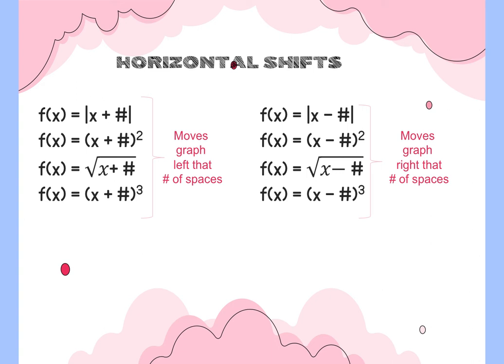If a number is inside the absolute value bars, inside parentheses, or underneath the square root — grouped with the variable — it causes a horizontal shift, and it goes in the opposite direction your brain thinks. Your brain says plus means right and minus means left, but it is reversed for horizontal shifts. If you're adding inside, it shifts left; if you're subtracting inside, it shifts right — the opposite direction.